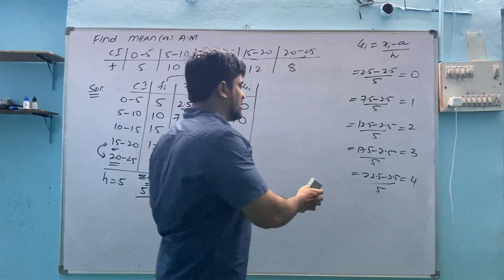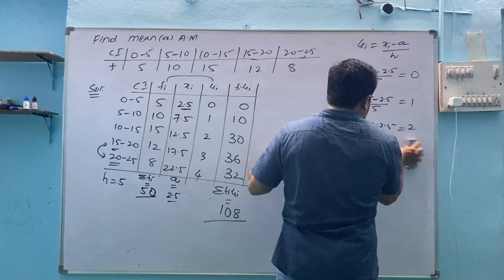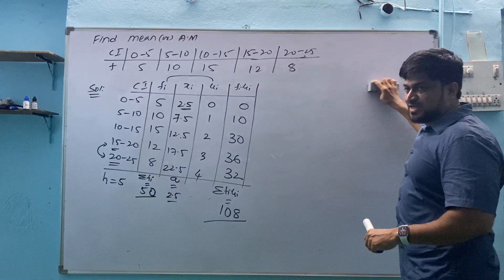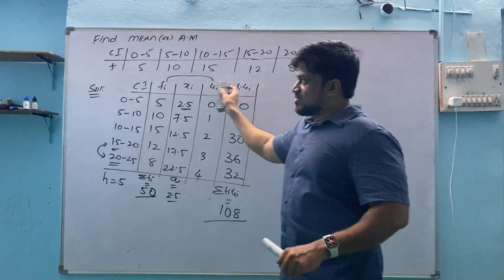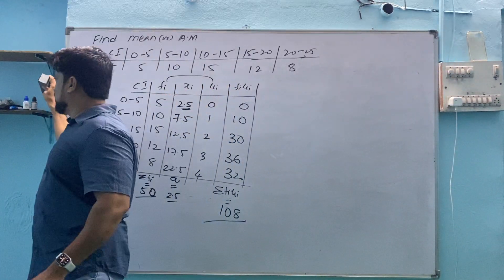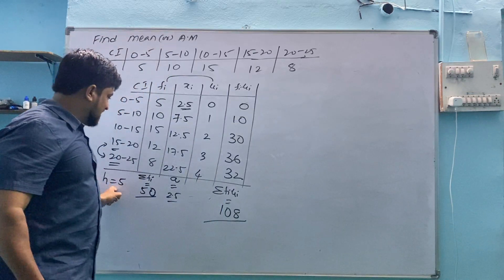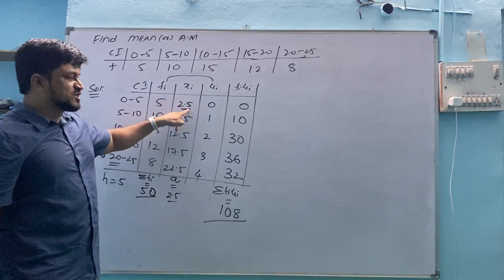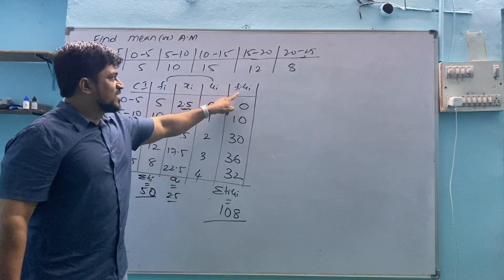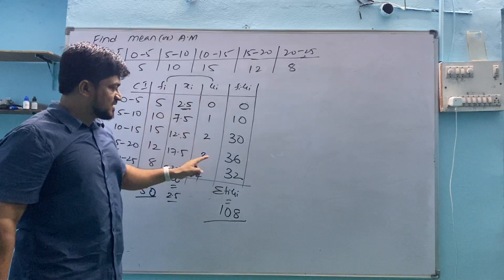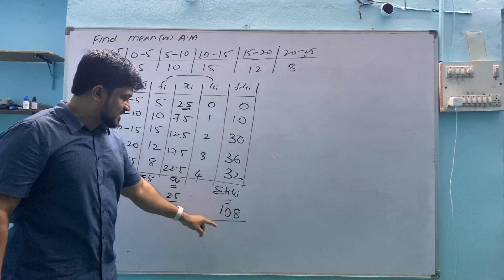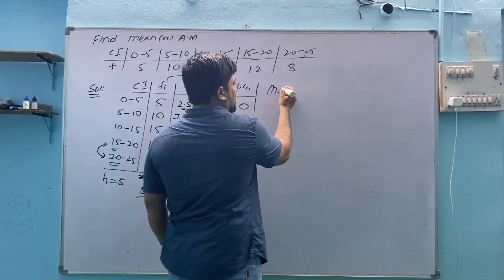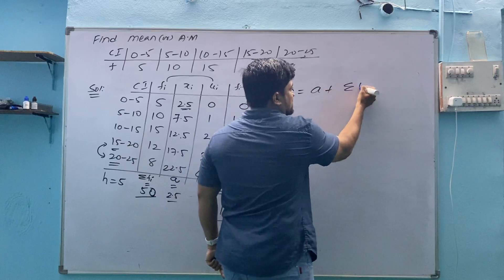What formula you have to remember? The things you need to remember whenever mean question is given: remember the column names CI, Fi, Xi, Ui, Fi into Ui. Then you have to remember what is H, the difference of these two. Sigma Fi is total of this one. From where we are getting A? A is first value of Xi always. What is Fi Ui? Fi and Ui column multiplication, then sum of this one since sigma is there. These are the four values which you have to find so that in the formula you can substitute it.